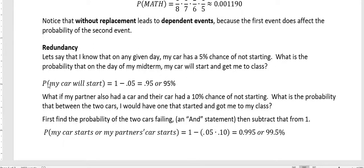Well, the probability that my car will start is one minus the probability that it won't start. So 5% is changed to a decimal is 0.05. So one minus 0.05 means that 0.95 or 95% of the time, my car will get me to class.